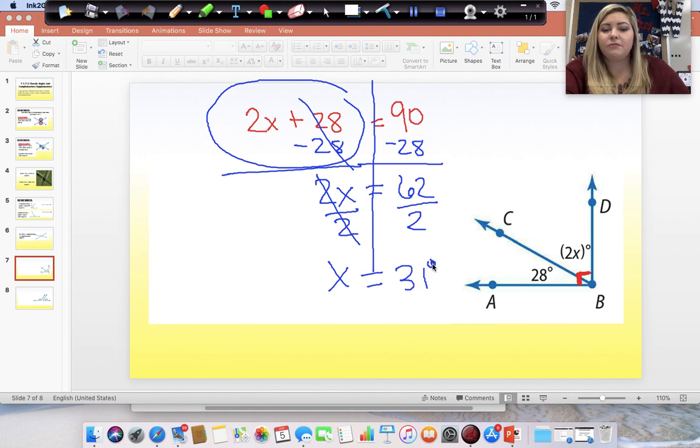It would be degrees. I don't know why I put that. 31. You've got to be careful because sometimes it's going to be asking for degrees and sometimes it's not. This x is not going to be the degrees because 2 times 31 would give us our degrees, which is 62. So, 62 degrees for this angle and our x is equal to 31.